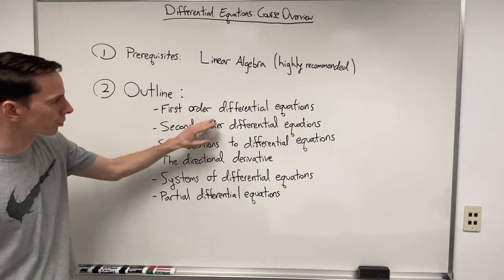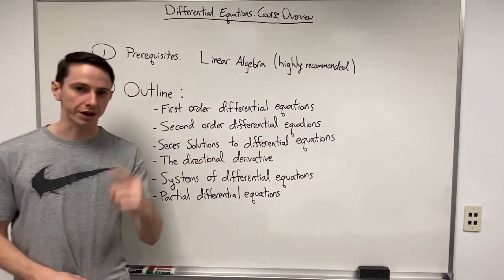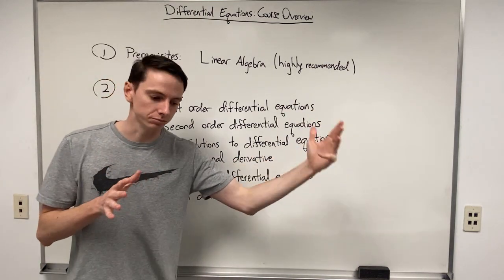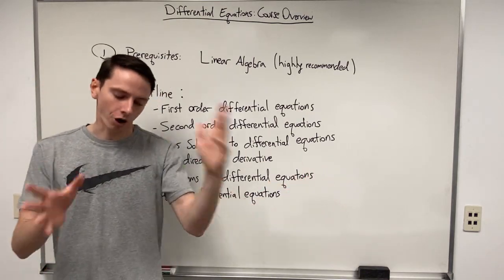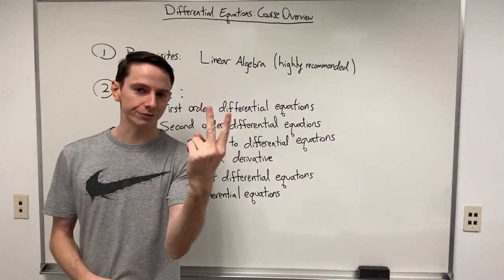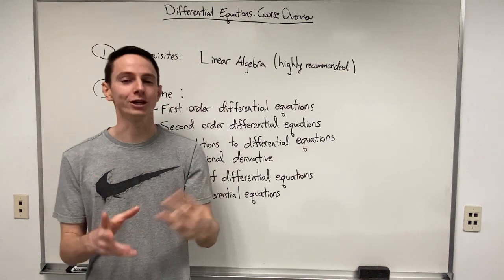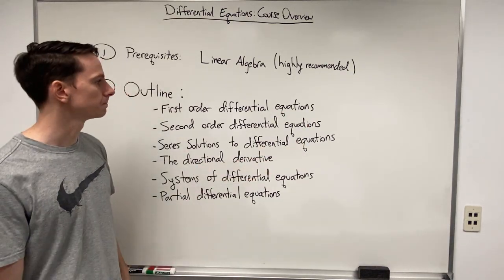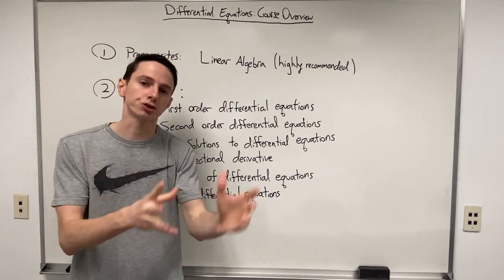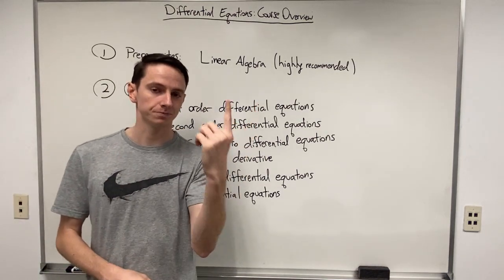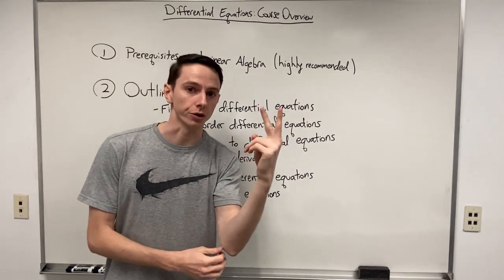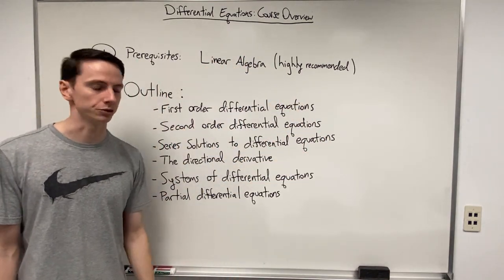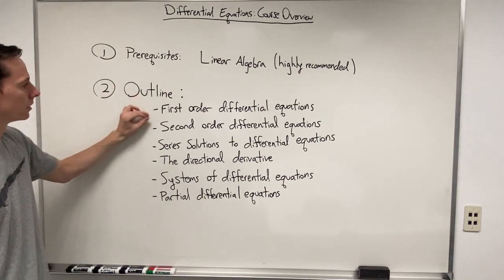The first section covers first order differential equations — equations containing both a function and its first derivative. We'll start with the simplest case: homogeneous linear differential equations with constant coefficients. These are kind of like three sets of training wheels — three ways to make a differential equation easier to solve. Then as the section progresses, we'll take those training wheels off, looking at non-homogeneous equations, non-constant coefficients, and finally non-linear first order differential equations.